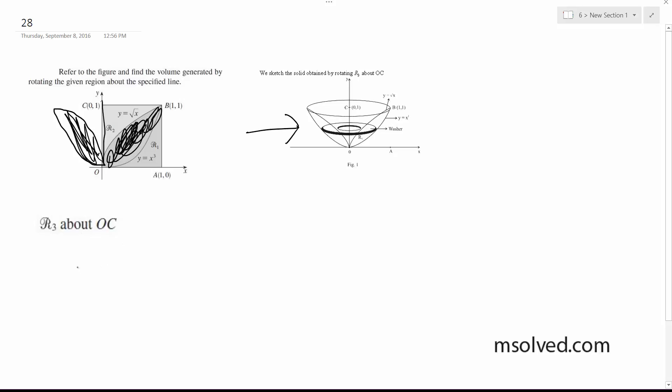So setting up initially, A(y) is equal to π times (y^(1/3))² minus y². We simplify this, we end up with π times (y^(2/3) minus y^4).